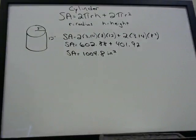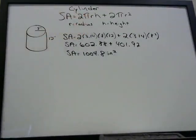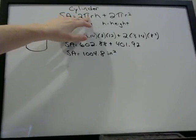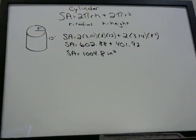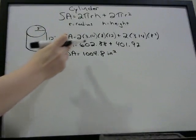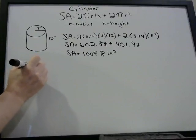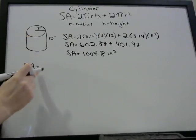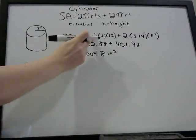I want to show you how to do this same problem when the test asks you to leave the answer in terms of pi. If you see a pi symbol in all the answer choices, you don't want to substitute 3.14, because you won't recognize the answer. When leaving it in terms of pi, we do the same setup but just leave the pi symbol there instead of replacing it with 3.14.